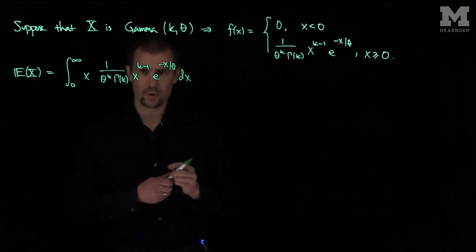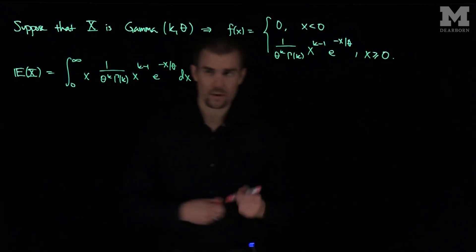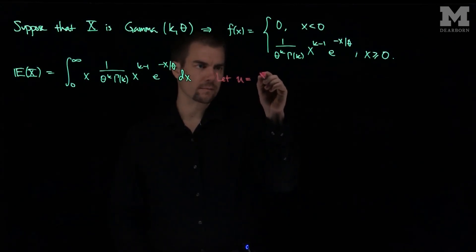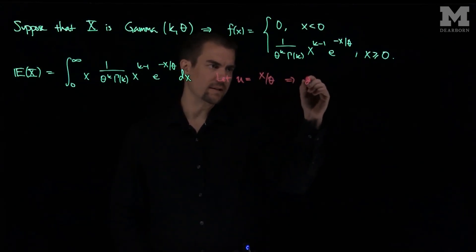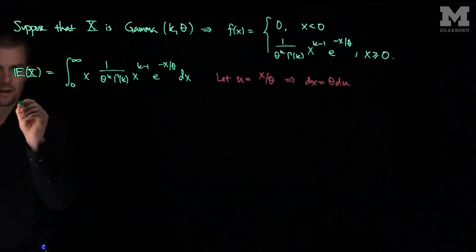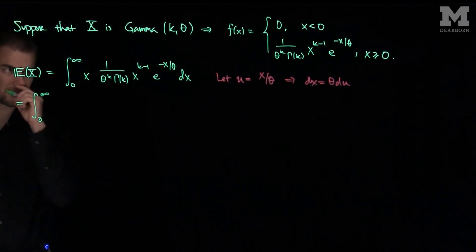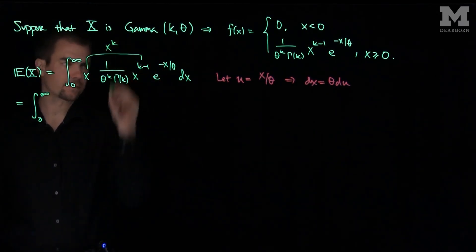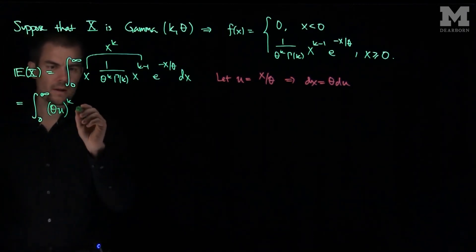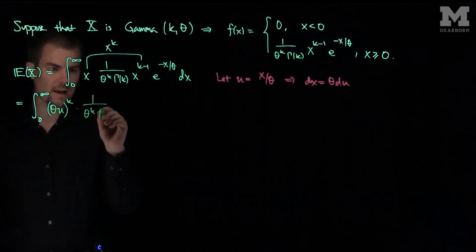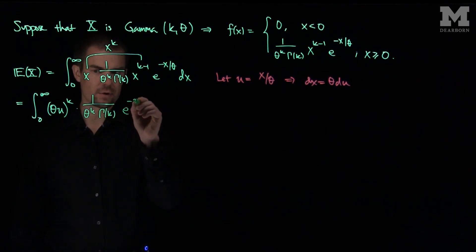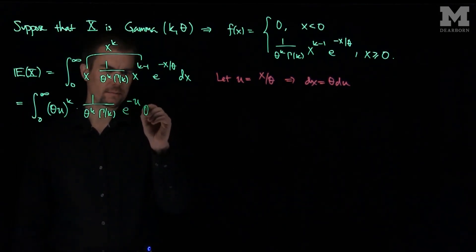Let's make a substitution as we did previously. If I let u be x over theta, then dx is going to be theta times du, and the limits of integration do not change. So the expected value is the integral from zero to infinity. I have x to the power k, which becomes theta*u to the power k, then one over theta to the k, gamma(k), e to the negative u, and then dx is replaced with theta du.